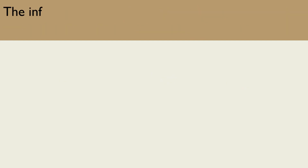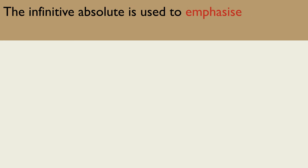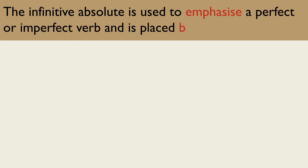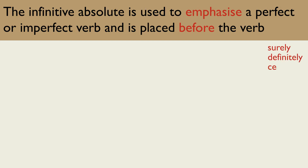The most common use of the infinitive absolute is to emphasise a perfect or imperfect verb. It is placed before the verb and is usually translated as an adverb — for example: surely, definitely, certainly.